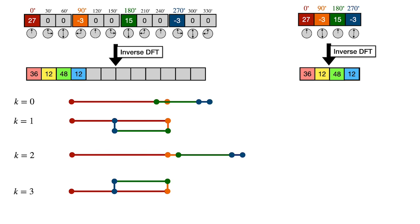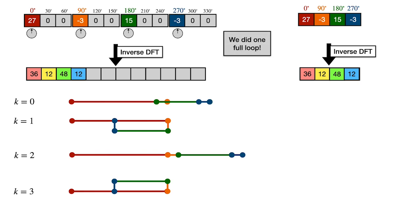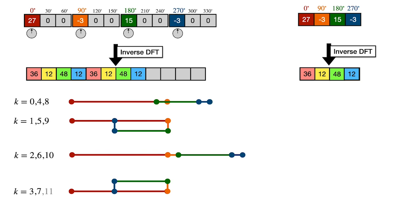For k equals 4, we rotate 30 more degrees — but since the zeros contribute nothing, only the pivots matter, and each pivot has already been rotated 360 degrees total. So we get the same result as k equals 0. The same applies for k equals 5 and 1, 6 and 2, 7 and 3 — we get a repeating copy of 36, 12, 48, 12. For entries 8 through 11, we again get 36, 12, 48, 12. Dividing everything by 12 gives 3, 1, 4, 1, 3, 1, 4, 1, 3, 1, 4, 1 — the original periodic sequence.